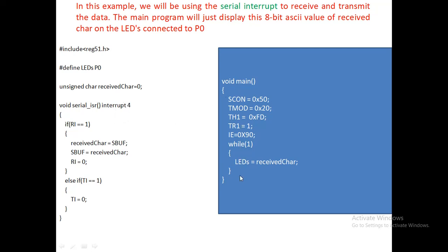Now for the main program — void main. SCON is equal to 0x50. Why am I using SCON? It is the serial communication control register. I have to configure this register for serial data transmission as well as reception. I am using mode 1. You can go through my serial communication lecture to understand why I configure SCON with 0x50.